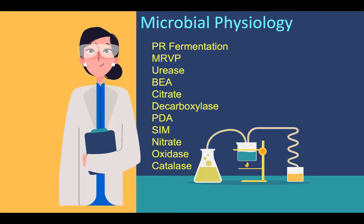Hello scholars, today we're going to continue our journey learning about microbial physiology tests that we use in the lab in order to help us identify different organisms. We have already covered PR fermentation as well as the MRVP, so in today's video we are going to be looking at the urease test, BEA, citrate, decarboxylase, and PDA. We will follow up with the next four tests in another video.